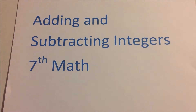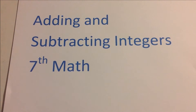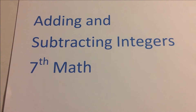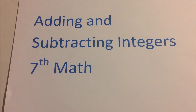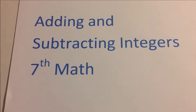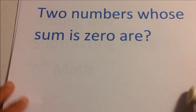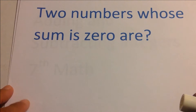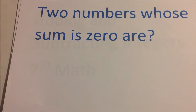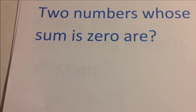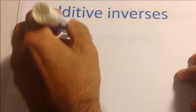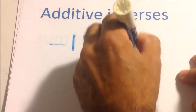Let's add and subtract integers. Remember, an integer is any number that's not a fraction or a decimal — they're positive and negative. Two numbers whose sum is zero are called additive inverses. For example, negative 11 plus 11 equals zero — they're additive inverses of each other.